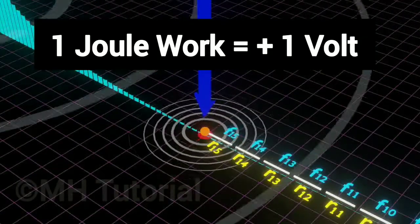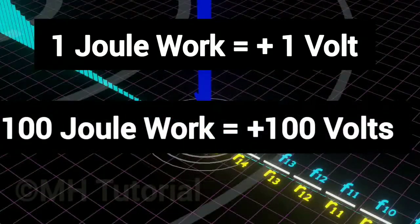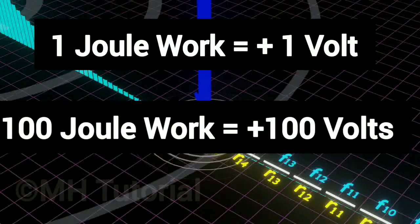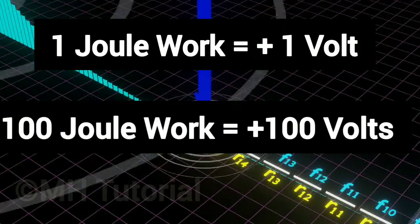One joule of work equals plus one volt. For a mechanical work of 100 joules, the potential is plus 100 volts, and so on.